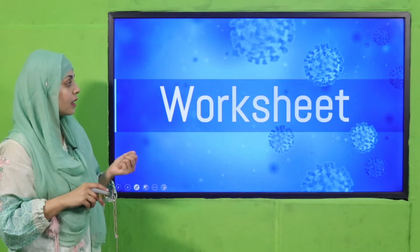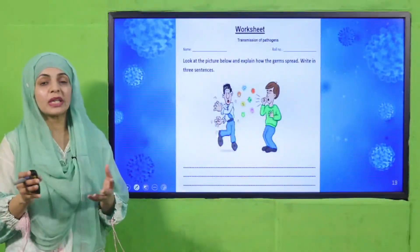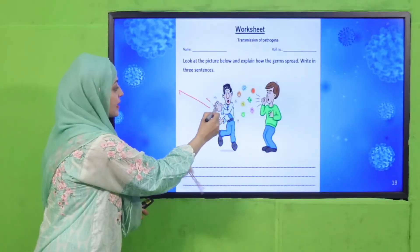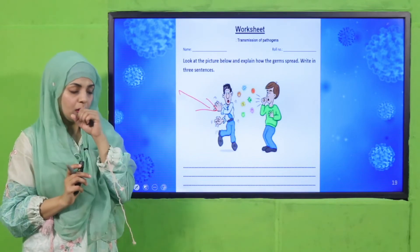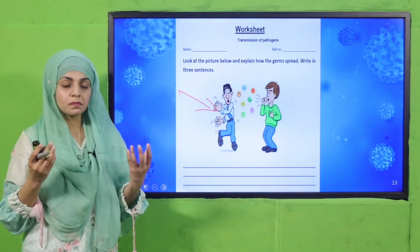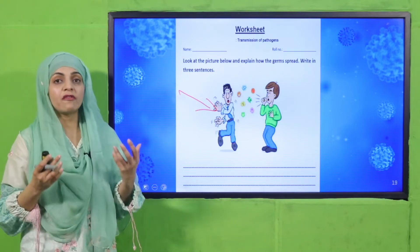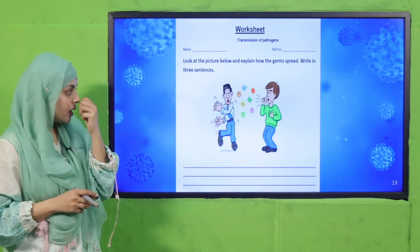Now is the time for the worksheet. You can download it from the description box below this video, or get it in print form from your teacher. For the worksheet on Transmission of Pathogens, write your name and roll number, look at the picture below, and explain how germs spread — write in three sentences. You can see a sick person coughing, and you have to explain how the healthy person can get sick. When the unhealthy person coughs, germs are added into the air, and if the healthy person inhales in such an environment, they can also get sick.